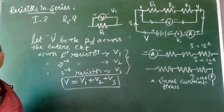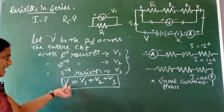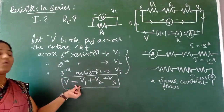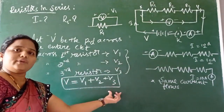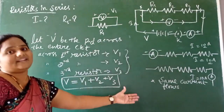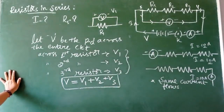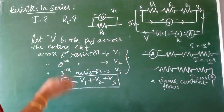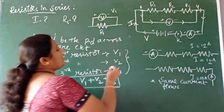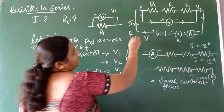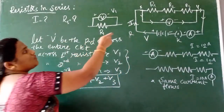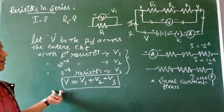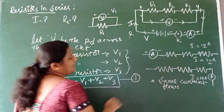So V is the total potential difference, equal to the sum of individual potential differences of resistors. Now, suppose current I flows through the entire circuit, and R is the total resistance. If we apply Ohm's law to this equation — call it equation 1 — we get V = IR.